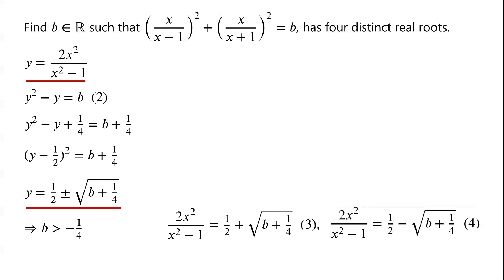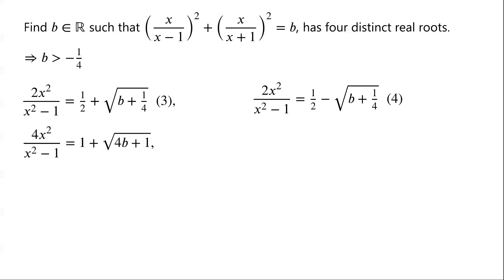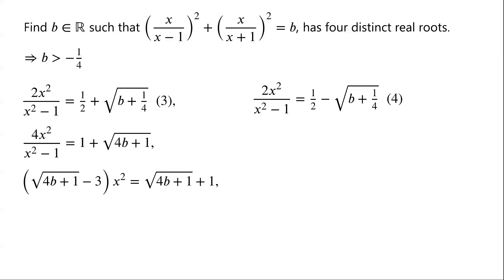The second equation: 2x²/(x²−1) = ½ − √(b + ¼). We label this as equation 4. Multiplying equation 3 by 2: 4x²/(x²−1) = 1 + √(4b+1). Multiplying by (x²−1) and rearranging: (√(4b+1) − 3)·x² = √(4b+1) + 1. For equation 3 to have two distinct real roots, x² must be greater than 0, and the right-hand side is greater than 0, so √(4b+1) − 3 must be greater than 0, meaning √(4b+1) > 3, which implies b > 2.